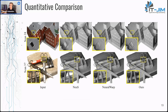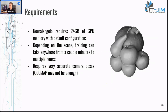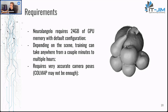Neural Angelo with its default configuration requires 24 gigabytes of GPU memory. Fortunately, there are official ways to reduce the framework to fit inside 16, 12, or even 8 gigabyte GPUs. Depending on the scene, training can take anywhere from a couple of minutes to multiple hours. I tried running it twice: the first time on the Lego bulldozer toy example, which took about 30 minutes to get a nice mesh; the second time I recorded an object myself and let it train for about five hours, but unfortunately the camera poses were off, so there was no mesh. It requires very accurate camera poses — COLMAP-recovered poses may not always suffice.